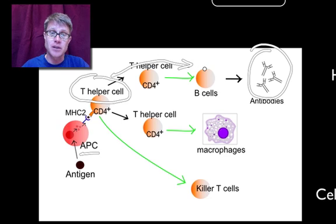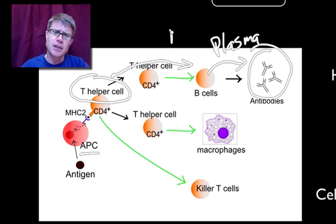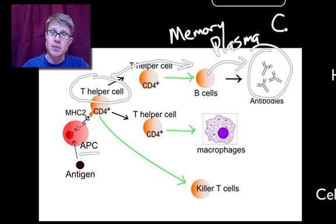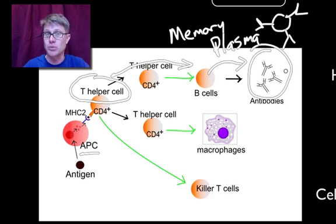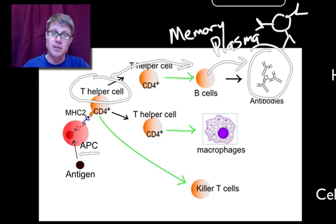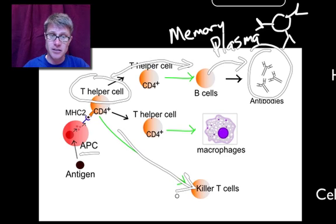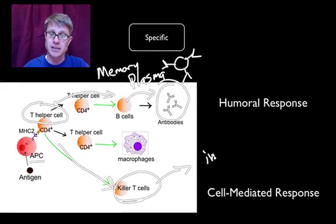The helper T cell makes two types of B cells: plasma B cells, which actually make antibodies, and memory B cells that have antibodies on their surface and that we keep for the rest of our lives so we can produce more antibodies really, really quickly. The helper T cell is also going to activate killer T cells, and those killer T cells are going to affect infected cells inside our body.